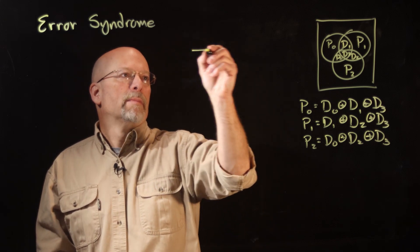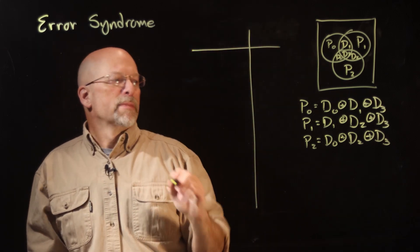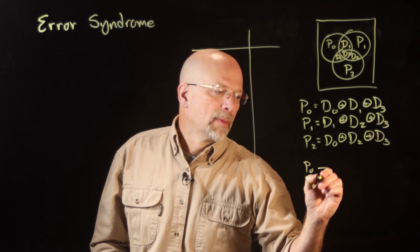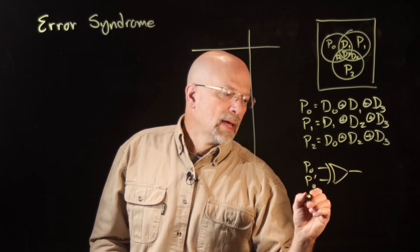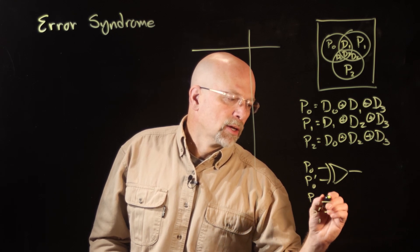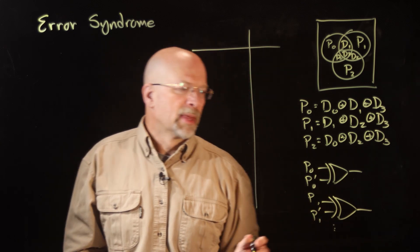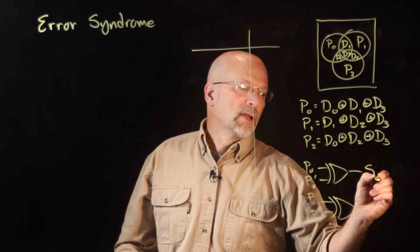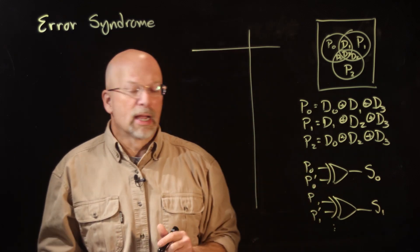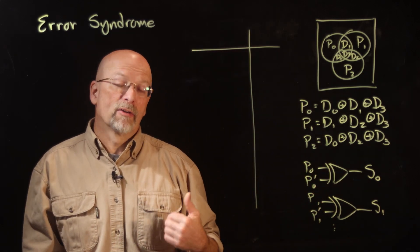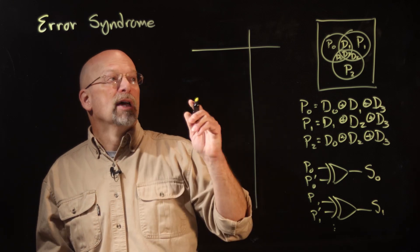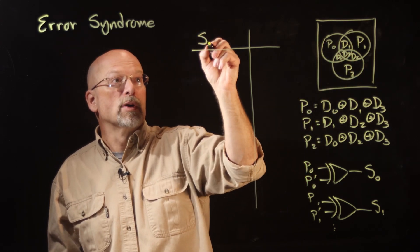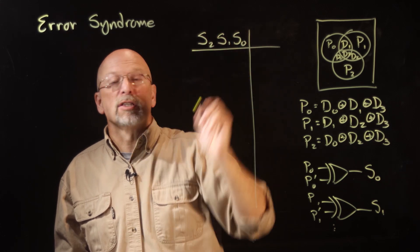Now let's look at the syndrome word with a truth table. P0 is compared with P0 prime going into an exclusive OR gate; P1 is compared with P1 prime, and so on. I'll identify the output of each comparison with the letter S. So comparing P0 with P0 prime gives S0; comparing P1 with P1 prime gives S1. For a four-bit Hamming code with three parity bits, there are also three syndrome bits.